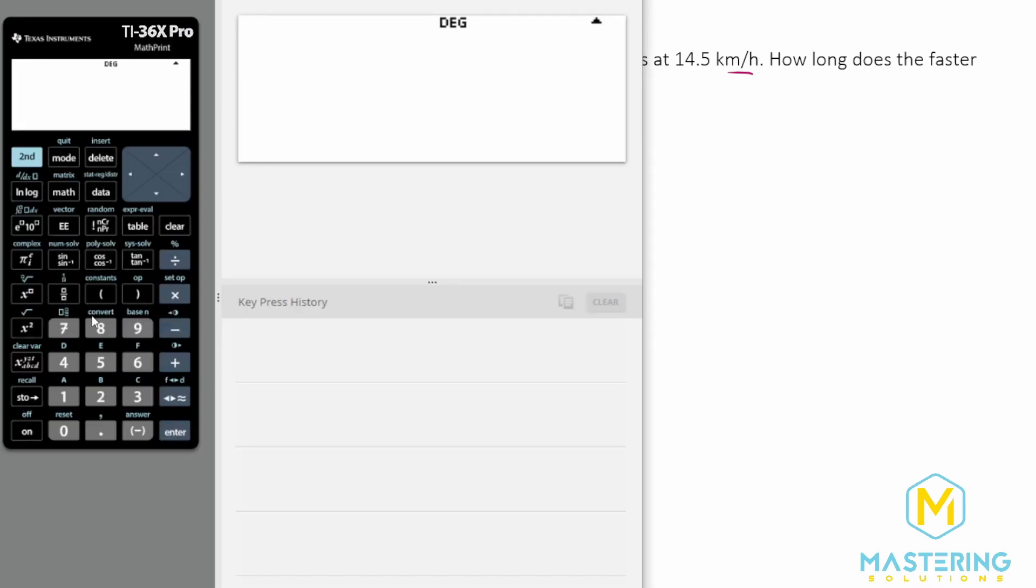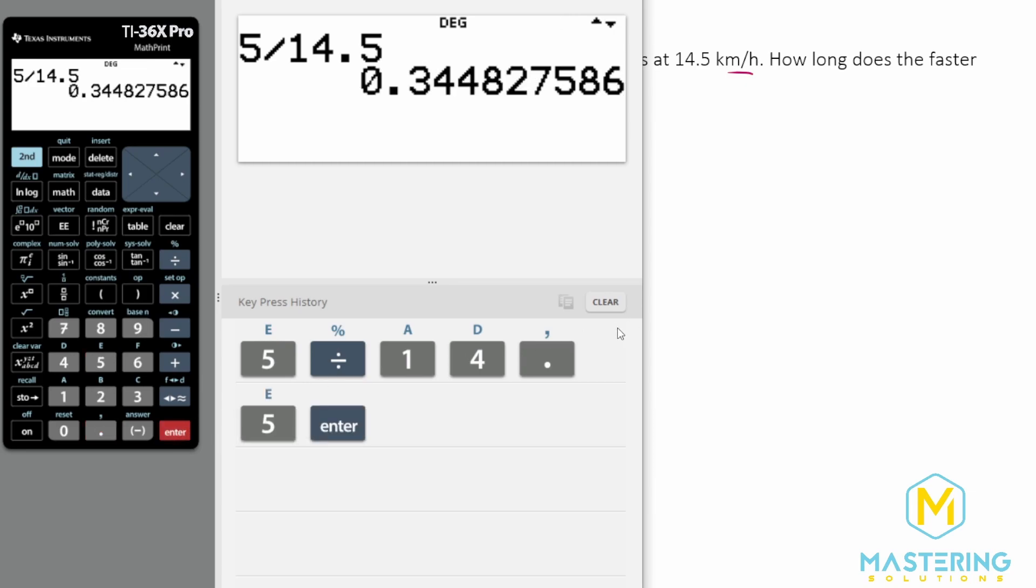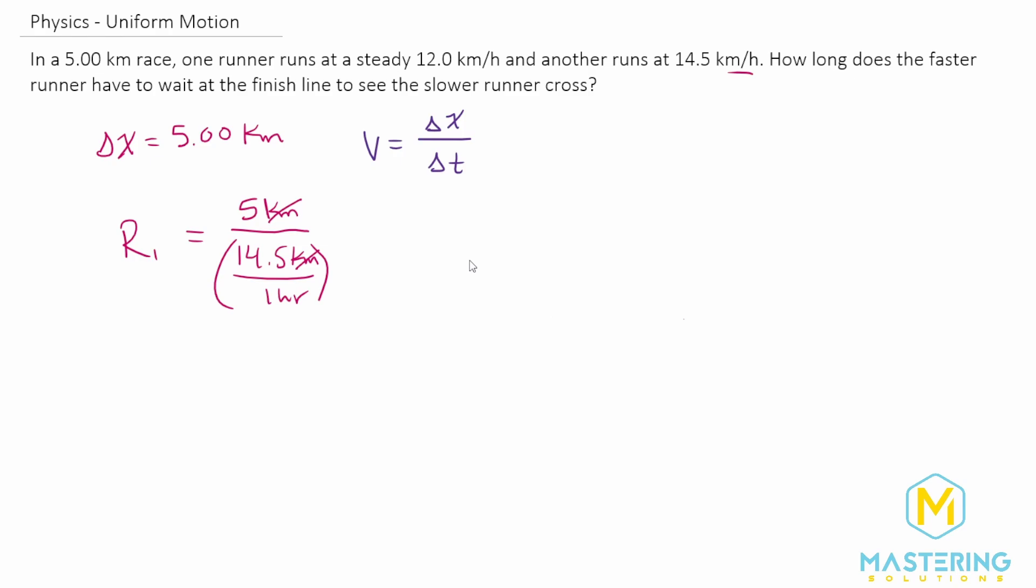So five divided by 14.5 gives us 0.345. So we have 0.345 hours.